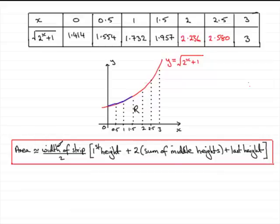To get the area, it's the width of a strip divided by 2. And the width of a strip you can see is half a unit. So let's start off by putting this in: the area is approximately the width of a strip, which is 0.5, or you could see it from the table here. So you've got 0.5 divided by 2.